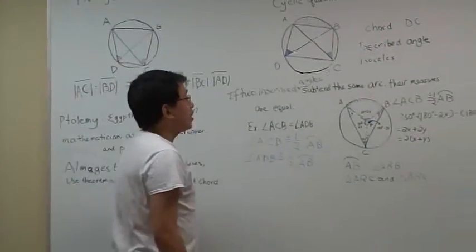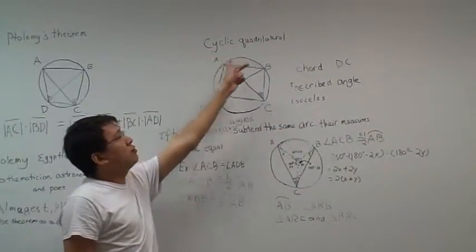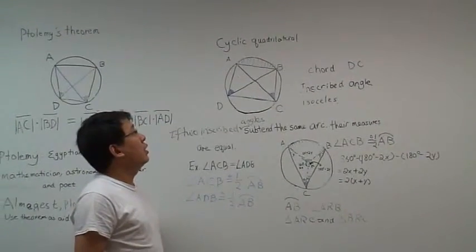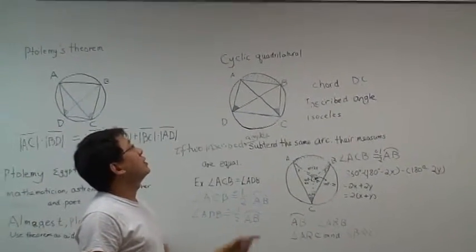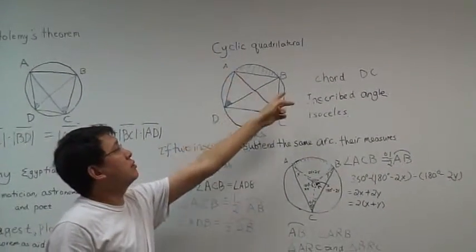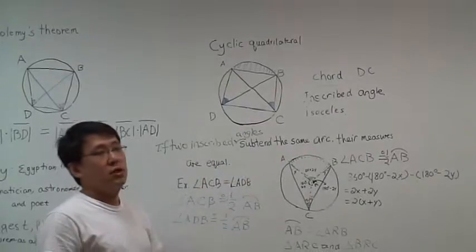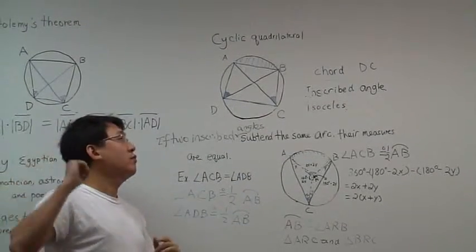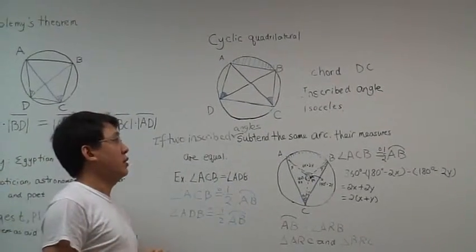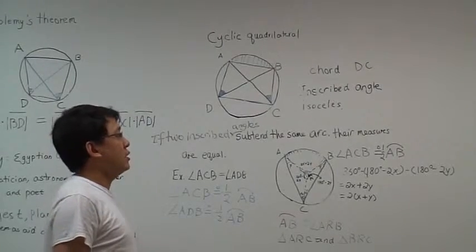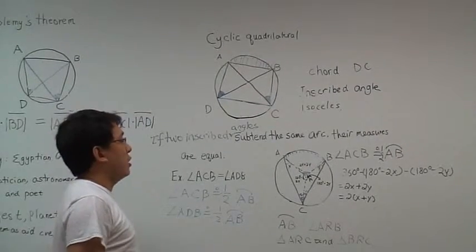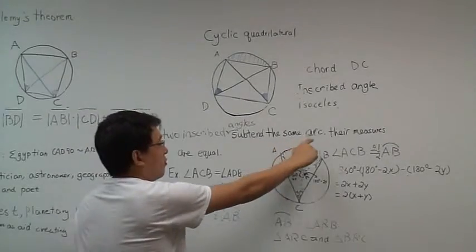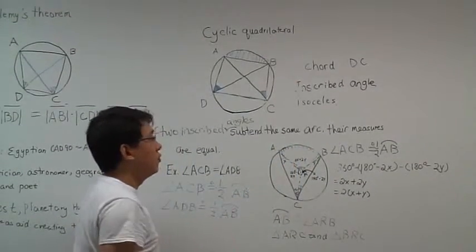Before we go into the actual proof, I want to introduce the cyclic quadrilateral. The cyclic quadrilateral is the essential part of the proof we are going to do later. The cyclic quadrilateral theorem states that if two inscribed angles subtend the same arc, they are equal.